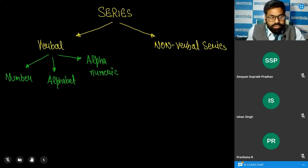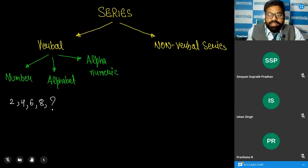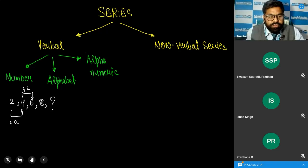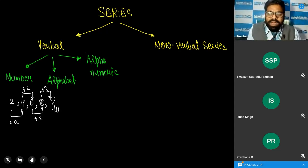Take the series: 2, 4, 6, 8 — what will be the next term? Ten will be the next term. How? From 2 to 4 that is plus 2, from 4 to 6 again plus 2, from 6 to 8 that is plus 2, so 8 plus 2 equals 10. We are observing the logic hidden in the series.